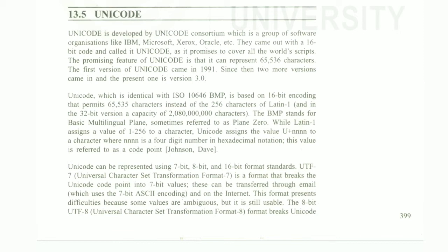They came up with a 16-bit code called Unicode, which promises to serve all the world's scripts. The promising feature of Unicode is that it can represent 65,536 characters. The first version of Unicode was in 1991, and since then two more versions have followed. The present day version is 3.0. Unicode is identical with ISO and uses base 16-bit encoding.